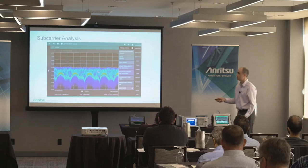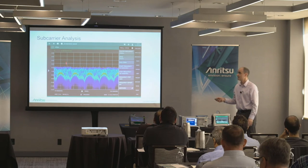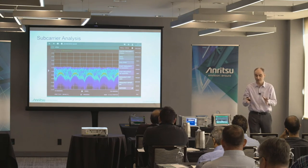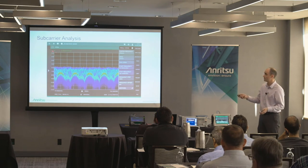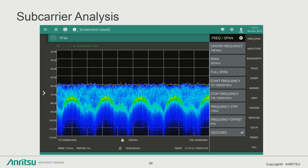Another RTSA technique: viewing individual subcarriers directly. You can see each subcarrier's shape and spacing, verify whether subcarriers are on or off, check for distortion, and infer subcarrier spacing by placing markers — useful for understanding signal health at the subcarrier level.